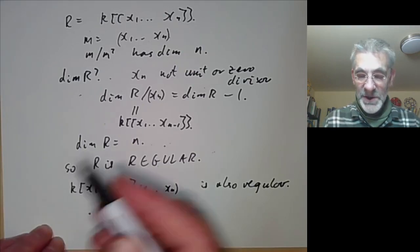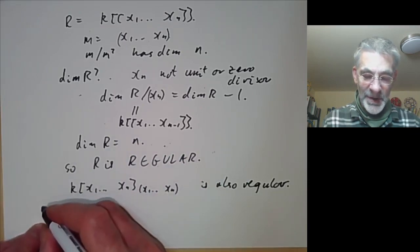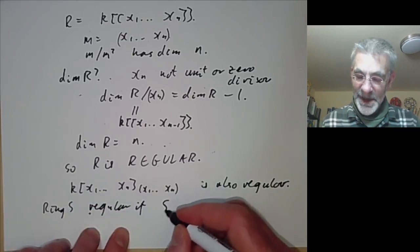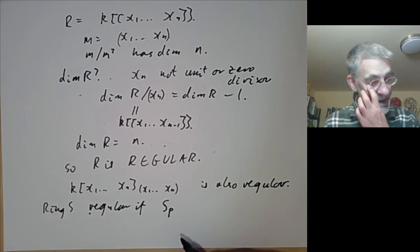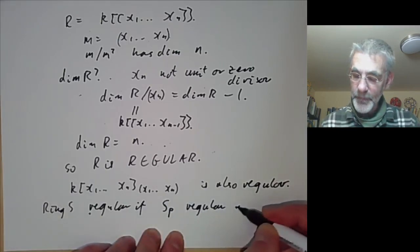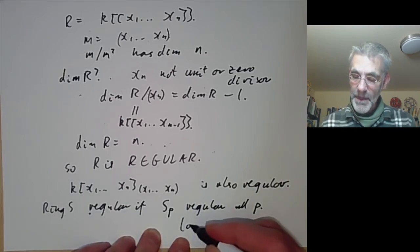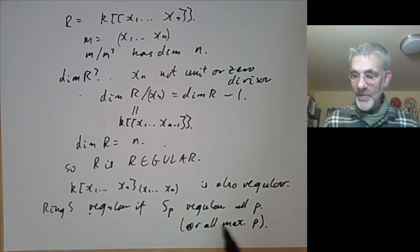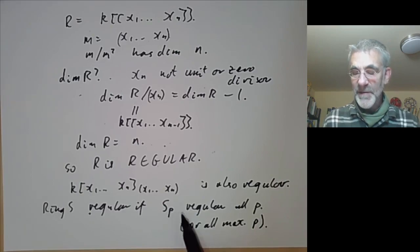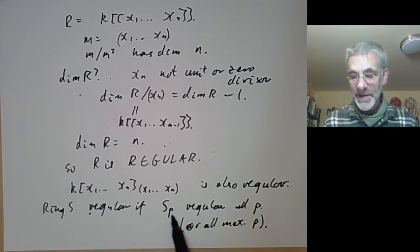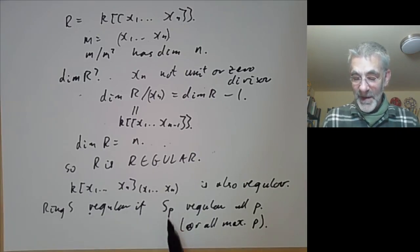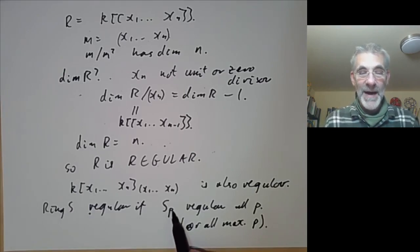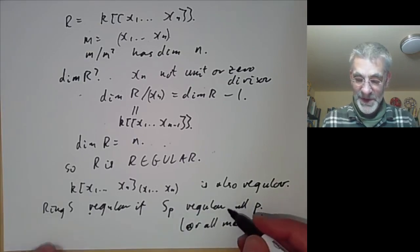We say a ring S, which is not necessarily a local ring, is called regular if all the localisations of S at prime ideals P are regular. In fact, it's sufficient to check all maximal ideals P, because Serre proved that the localisation of any regular local ring is also regular. So for a localisation of S at some non-maximal ideal, you can first take the localisation at a maximal ideal and then localise that — by Serre's theorem, this is regular.